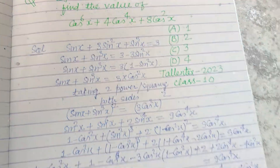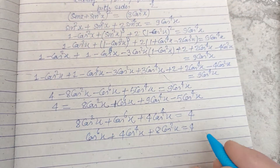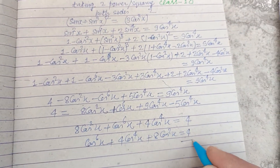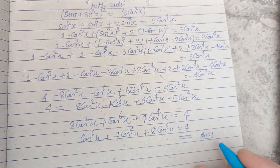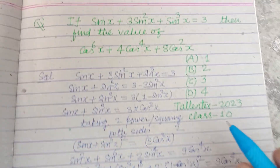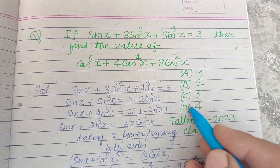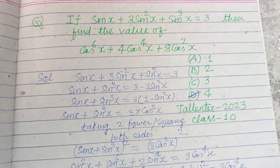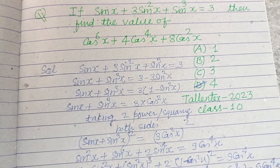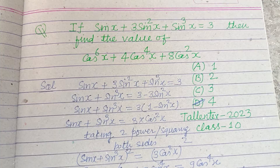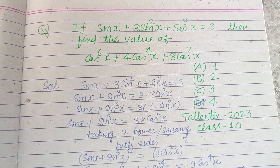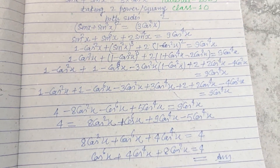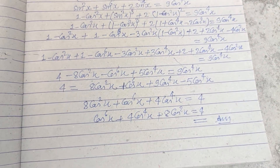Therefore cos⁶x + 4cos⁴x + 8cos²x = 4, so 4 is the correct answer, found in option D. Therefore option D is correct. I hope you got it — please like the video, subscribe the channel, thanks for watching.